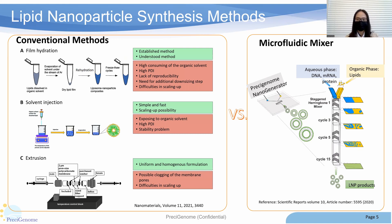The next question is how to prepare lipid nanoparticles. Conventional methods include film rehydration and solvent injection. However, these methods usually face the problem of having a large PDI, which means the solution is heterogeneous, and the reproducibility is very low. Extrusion is the traditional way to enhance the homogeneity of the LNP solution; however, it needs extra steps and is difficult to scale up.